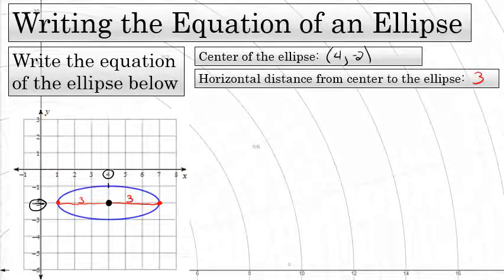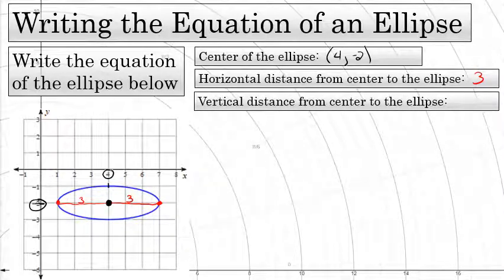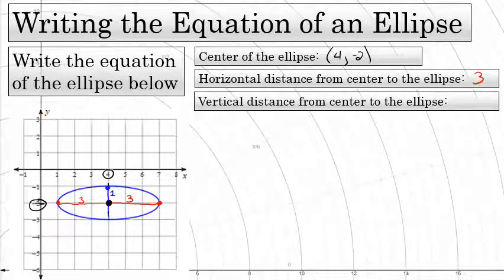The third and final property you'll need to write the equation of the ellipse is the vertical distance from the center to the top and to the bottom. In this case, the distance from the center to the top is one unit, as is the distance from the center to the edge of the ellipse straight down — one unit.